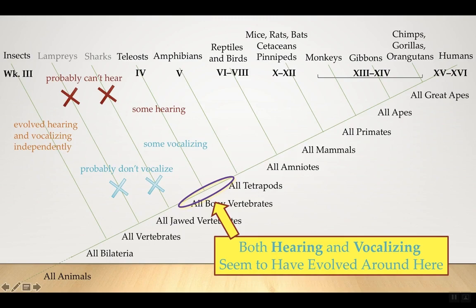Hearing seems to have evolved somewhere around the bony fish, though it's hard to say exactly when. Both hearing and vocalizing seem to have evolved around the same time. Which came first? Vocalization before hearing wouldn't make sense — no one would hear it. So presumably hearing evolves first, to be aware of predators. But as soon as hearing evolves, animals can hear their peers as well, and peers start communicating through sound.